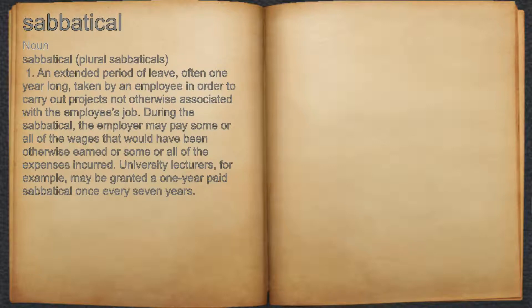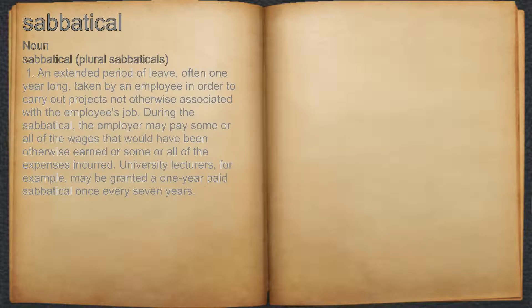Sabbatical. Noun. 1. An extended period of leave, often one year long, taken by an employee in order to carry out projects not otherwise associated with the employee's job. During the sabbatical, the employer may pay some or all of the wages that would have been otherwise earned, or some or all of the expenses incurred. University lecturers, for example, may be granted a one-year paid sabbatical once every seven years.